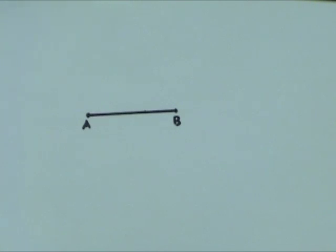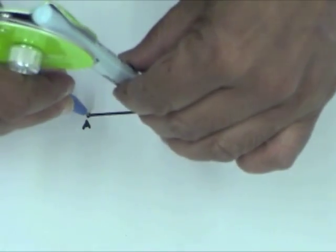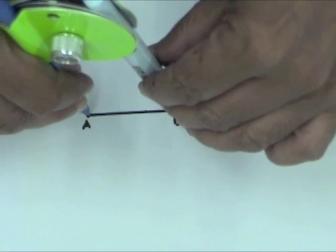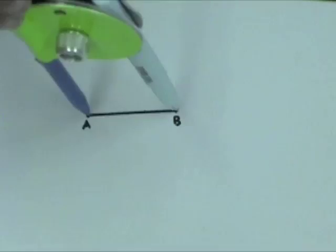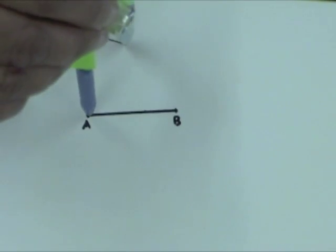place the compass point on A and set the compass width to the length of AB. Draw a large arc.